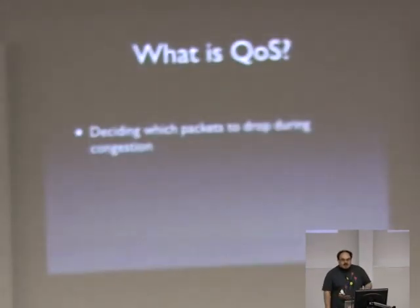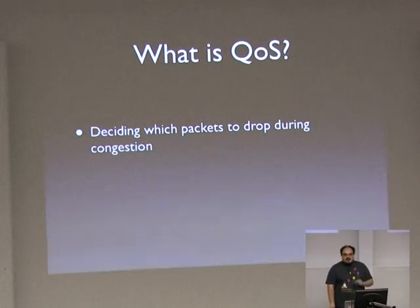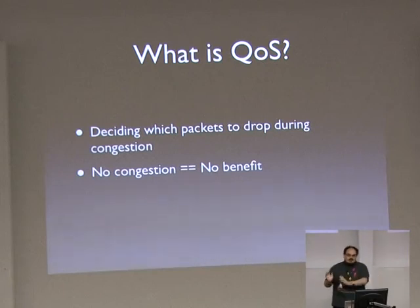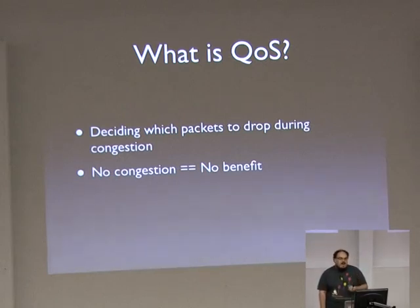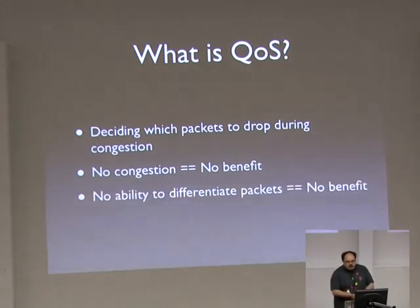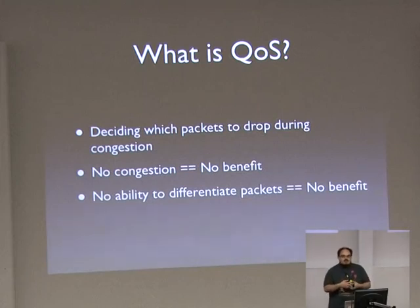So ultimately the whole premise of this talk is a very simple question: what is quality of service? It is deciding which packets to drop during congestion. Nothing more, nothing less. If you don't have any congestion, you don't get any benefit. Now there's a big difference between not thinking you have any congestion and not actually having any congestion. If you don't monitor your network heavily - and in fact much hardware doesn't let you know - you may not realize. Shout out to Arista hardware here, which made a nice point of actually letting you monitor some of the internals at a very low level that let you actually answer that question.